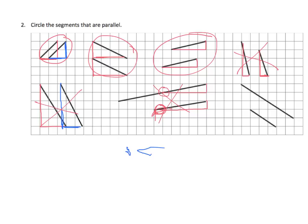Looking at the next one, we see it intersects at certain grid points. Even though it's not perfectly laid out, intersecting here and here pretty closely, I can count the grid units and determine the rise and run for both lines. I find they match up, so I'd say those are parallel. Eyeballing it, they don't look exactly parallel, but they are — so we need to circle that one as well. You can see that right triangles help us determine whether lines are parallel.